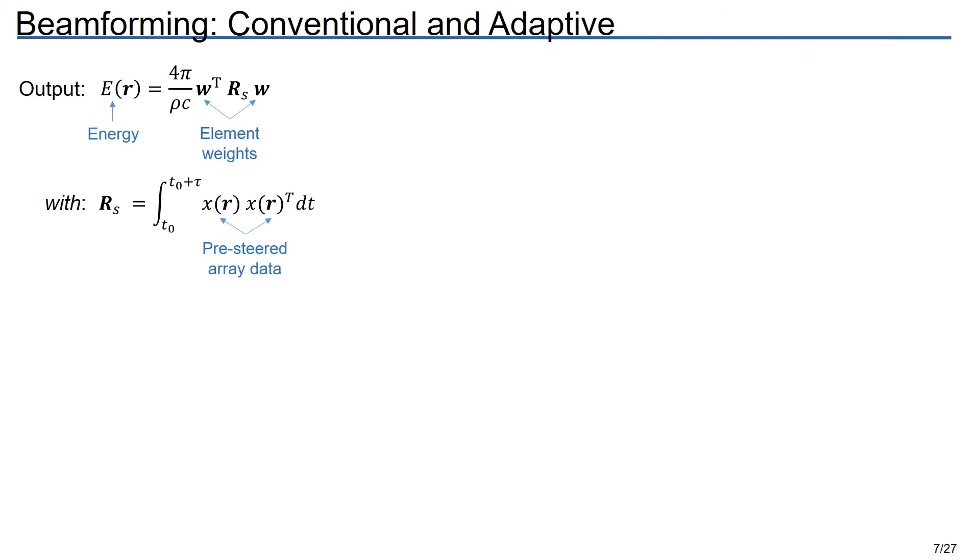In case you thought this presentation was all words and pictures, here's a math slide. Our beamformer output is an estimate of the monopolar source energy emitted from each grid point that we're imaging. The basis of this calculation is the data covariance matrix, capital R_s. We see that it's scaled here by the element weights, W, and the estimates of tissue properties, rho and C. You can see from the second line here that R_s is calculated with pre-steered array data, and all that means is that we correct the data first using a free space Green's function based on the distance between the elements and the imaging point, so that for each imaging point the residual steering vector is just a vector of ones. So how do we get the weights out of this?